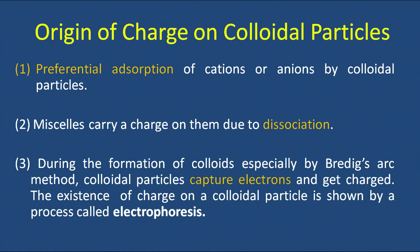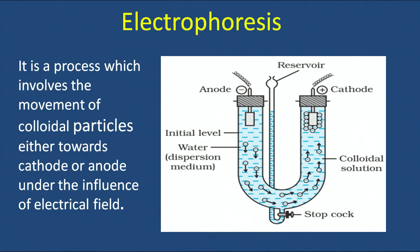The existence of charge on colloidal particles can be demonstrated by a property called electrophoresis. In electrophoresis, a colloid is placed in a U-tube with two electrodes at the two limbs, and an electric field is applied. Under the influence of the electric field, colloidal particles move toward the oppositely charged electrode. If the colloidal particles carry negative charge, they move toward the positively charged electrode. The movement of colloidal particles can be observed by the change in appearance of the solution, confirming the presence of charges on the surface of the particles.